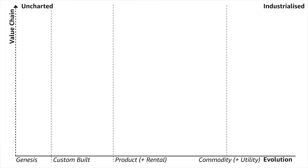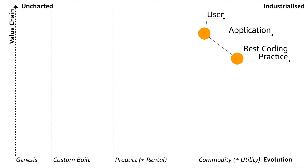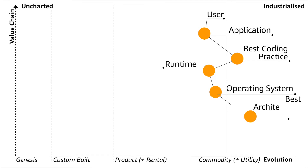To demonstrate this we're going to start with a map. This is a map of compute in 2006, starting from the point of view of a user needing an application. That application is built with best coding practice on a runtime — a coding environment like .NET or LAMP. That is built on an operating system, and that is built on best architectural practice for compute as a product. Back in 2006, those architectural practices included things like N+1, disaster recovery tests, and capacity planning.